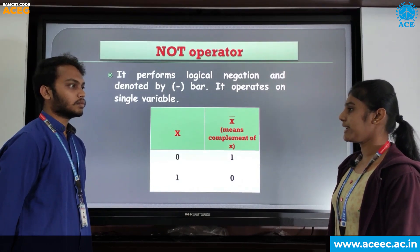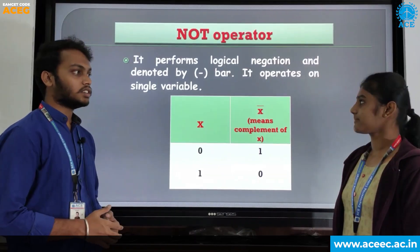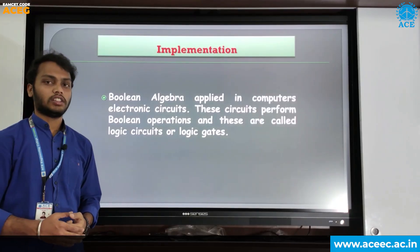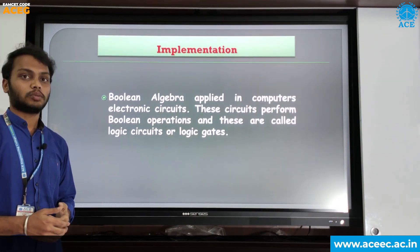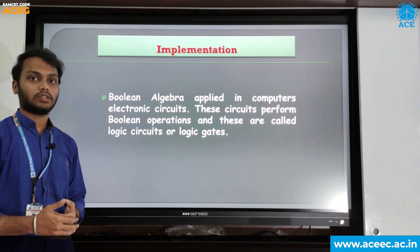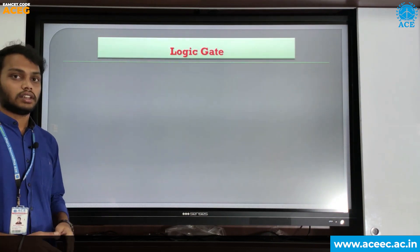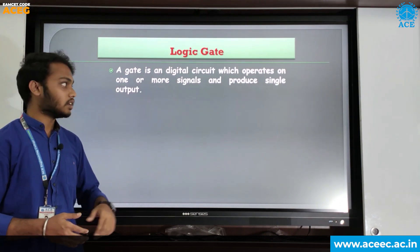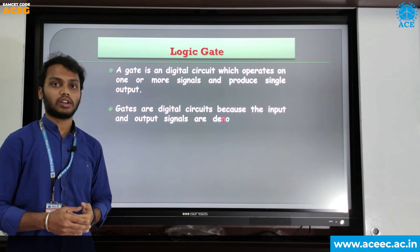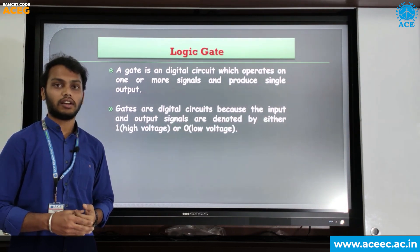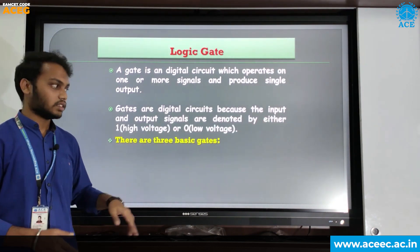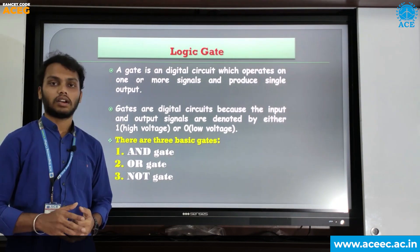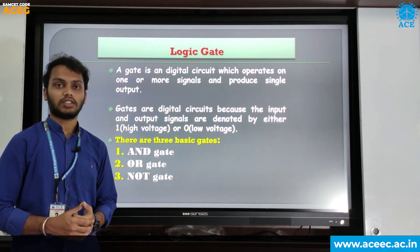Can you explain the implementation of Boolean algebra in digital computers? Boolean algebra is applied in computer electronic circuits. These circuits perform Boolean operations and are called logic circuits or logic gates. A gate is a digital circuit which operates on one or more input signals and produces only one output signal. Gates are digital circuits because their input and output signals are denoted by either 1 or 0. There are totally three basic gates: AND gate, OR gate, and NOT gate.